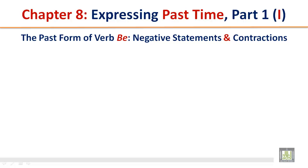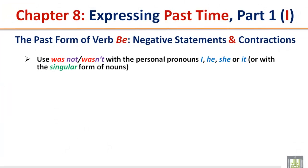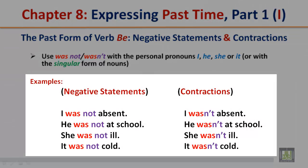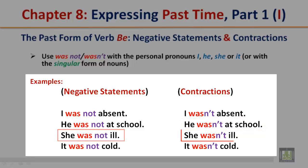The past form of verb be — negative statements and contractions. Use 'was not' and the contraction 'wasn't' with the personal pronouns I, he, she, or it, or with the singular form of nouns. Examples: I was not absent / I wasn't absent. He was not at school / he wasn't at school. She was not ill / she wasn't ill. It was not cold / it wasn't cold.